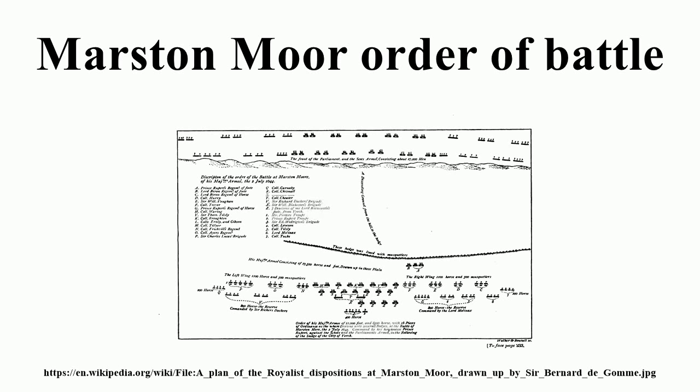Parliamentarian Army of Ferdinando Lord Fairfax. General Lord Fairfax, Lieutenant General Sir Thomas Fairfax, Sergeant Major General of the Horse John Lambert. Lord Fairfax's Regiment, Sir Thomas Fairfax's Regiment, Charles Fairfax's Regiment, Sir Hugh Bethel's Regiment, John Lambert's Regiment, Lionel Copley's Regiment, Francis Boynton's Regiment, Sir Thomas Naucliffe's Regiment, George Dodding's Regiment. Dragoons: Thomas Morgan.